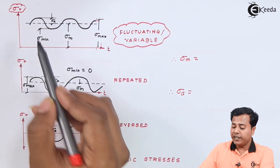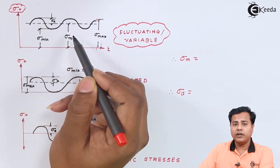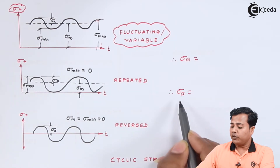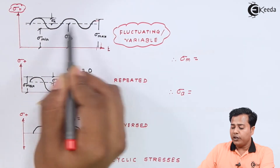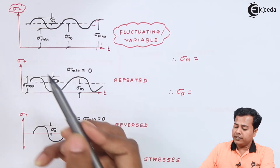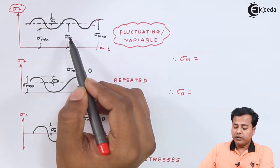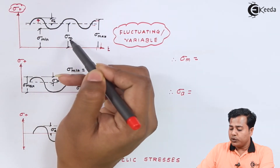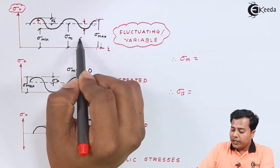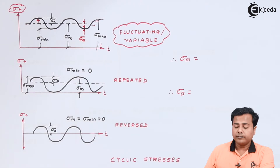All stresses keep changing within this range. Since it is not possible to analyze every point, mean values are used. A line drawn through the mean point gives the mean stress. The amplitude stress is the deviation — either upward or downward — from the mean stress. The upper deviation and lower deviation from the mean are both referred to as amplitude stress.